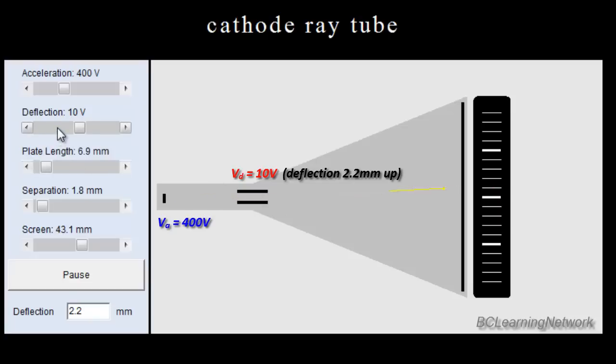In fact, if I make my voltage the reverse polarity, you see that deflection is equal and opposite, it's on the bottom. Now at the bottom of the simulation, it actually gives us our deflection, negative 2.2 millimeters. And what we want to do is use this simulation to see what the relationship is between the deflecting voltage and our deflection, or our final deflection.